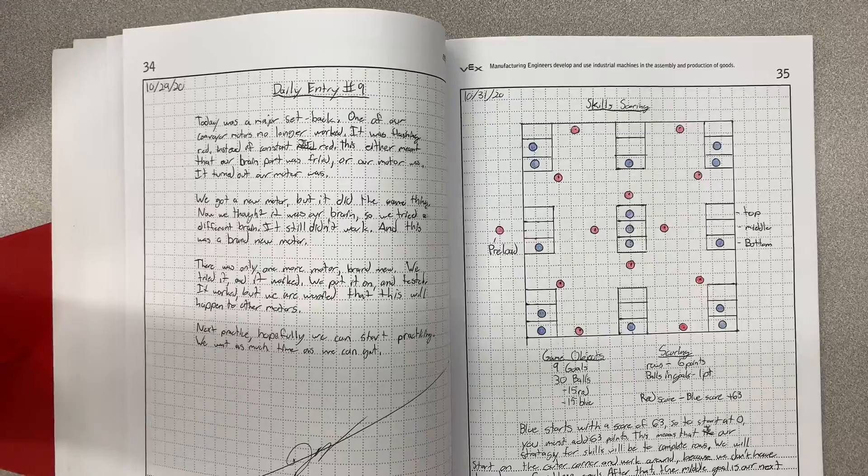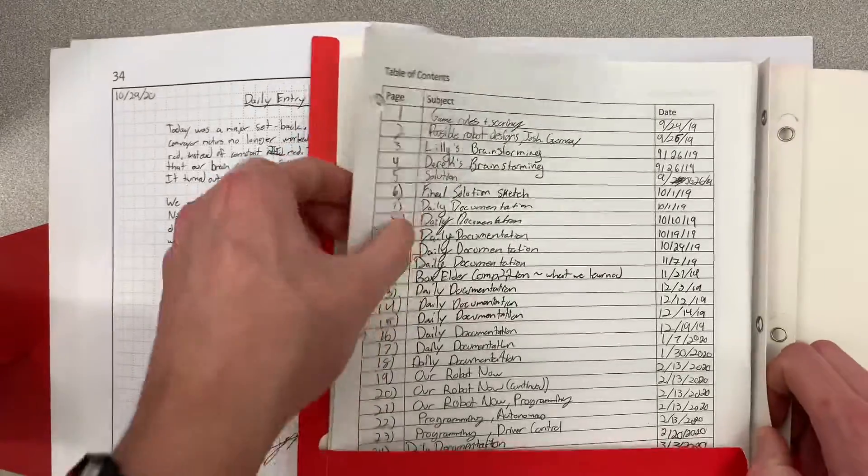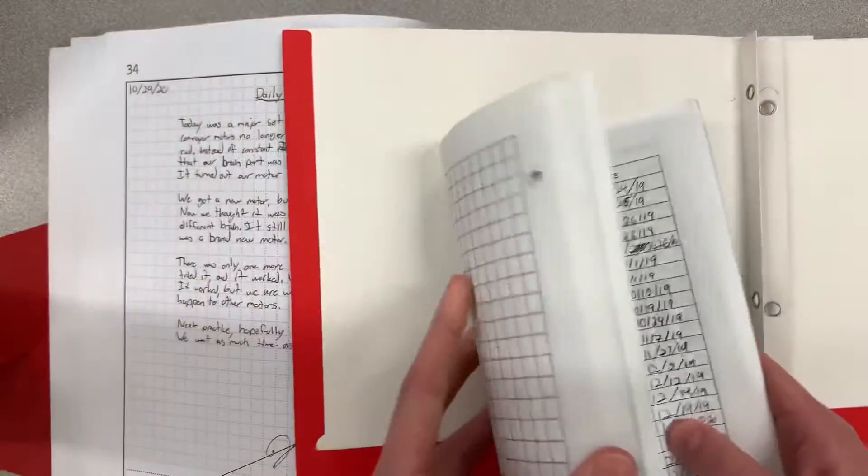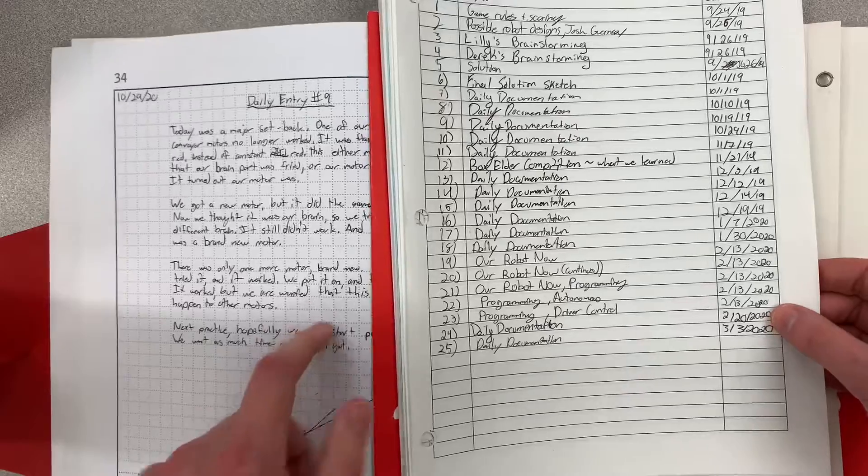So now to compare this notebook to our previous notebook. This one, as you can see, first flop, it's not bound. So that already is, this notebook has one up on that.